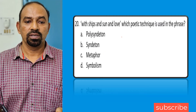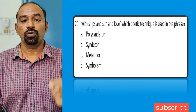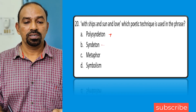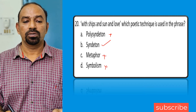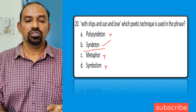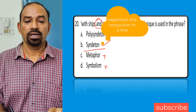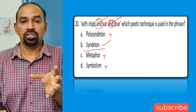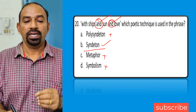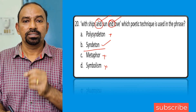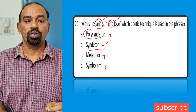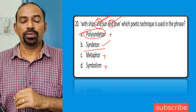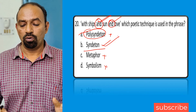Question twenty: 'With ships and sun and love' — which poetic technique is used? The answer is syndeton. Syndeton means repetition of a conjunction — 'and', 'or', 'but'. When a conjunction is repeated in a line, it is called syndeton. When more than one conjunction is repeated, it is polysyndeton. Here only the conjunction 'and' is repeated, so syndeton is the right option.